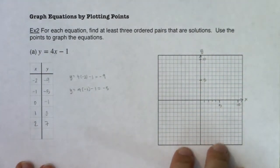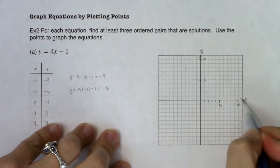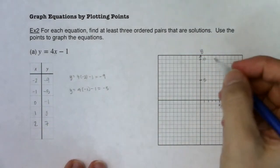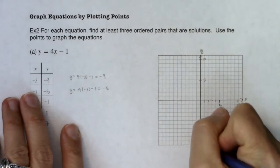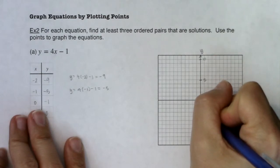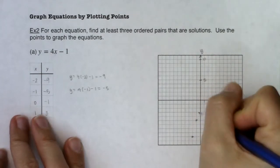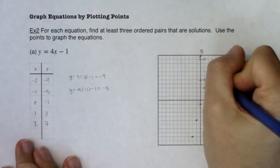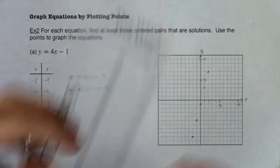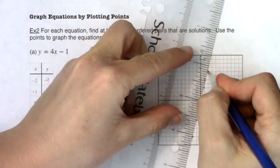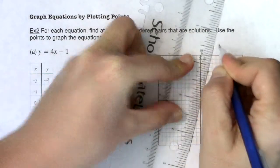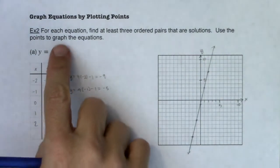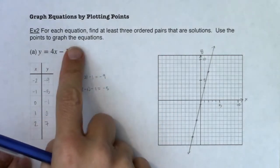This is your basic Cartesian coordinate system — it's always going to be 11 units in either direction from the origin: 11 squares right, 11 up, 11 left, and 11 down. Let's put the ordered pairs on here. We've got (-2, -9), then (-1, -5), then (0, -1), then (1, 3), and (2, 7). Taking a look at that, I can see the line in here. That's the graph of that equation. For each equation, I found three ordered pairs and used those points to graph it.